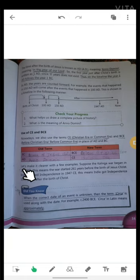Let's make it clearer with a few examples. Suppose the Kalinga war began in 261 BC. This means the war started 261 years before the birth of Jesus Christ.